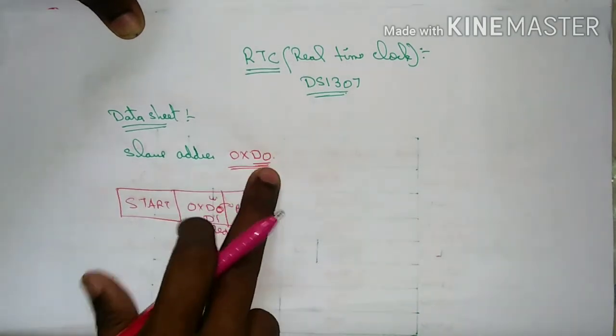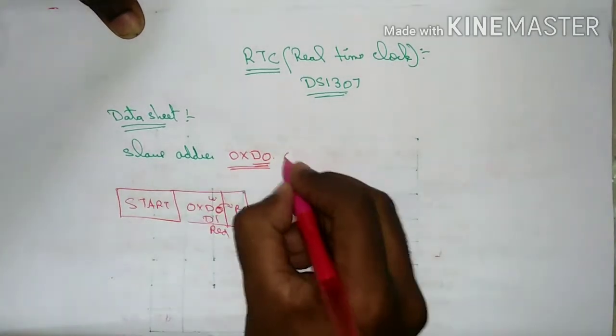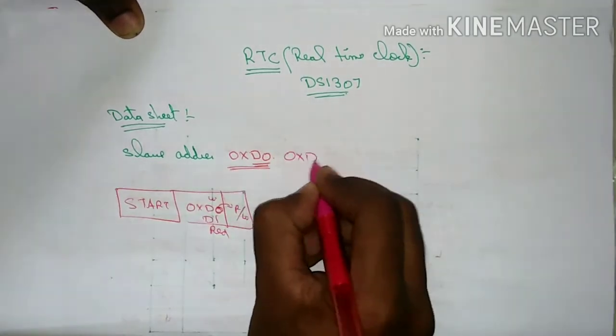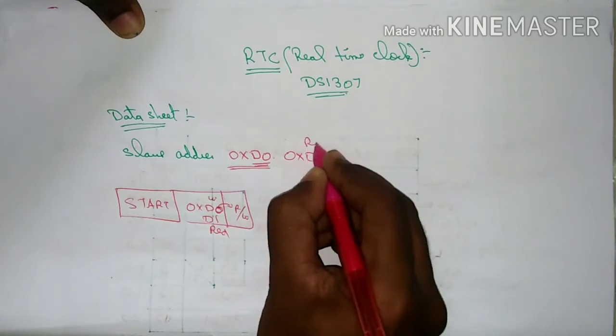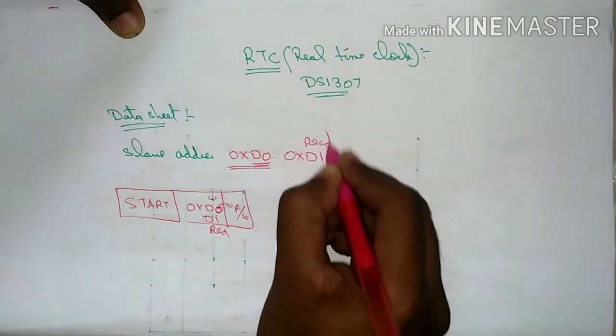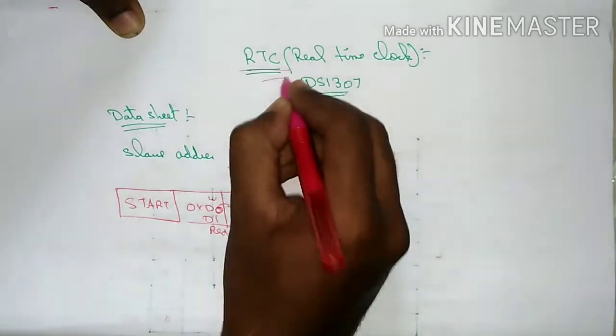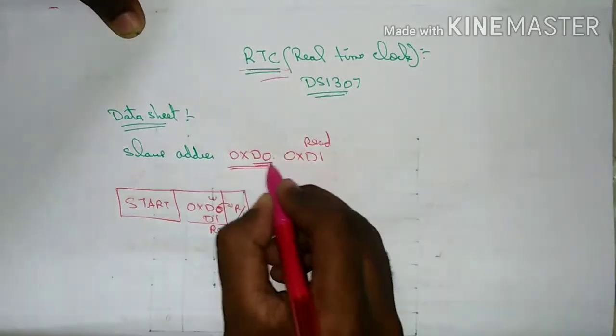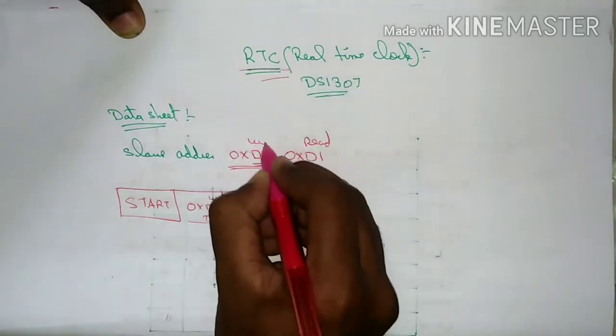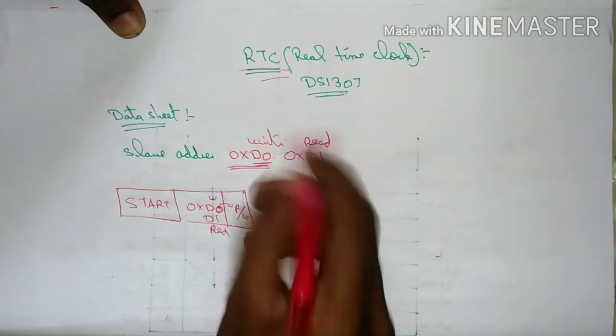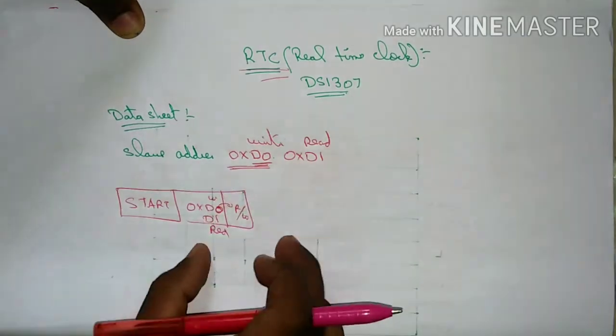D0 is the address, but if you have 0xD1, read the RTC. So here we have to write the same — this is the slave address.